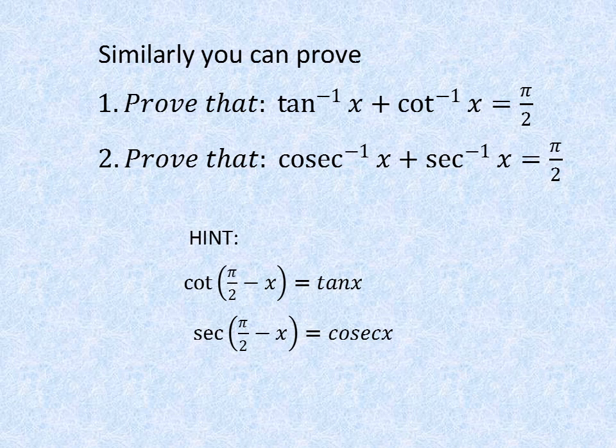For the identity tan inverse x plus cot inverse x equals pi by 2, you have to write tan y in terms of cot, using cot(pi by 2 minus x) equals tan x. And for the identity cosec inverse x plus sec inverse x equals pi by 2, you use sec(pi by 2 minus x) equals cosec x. Try both these identities yourself, and if you find any problem you can contact me.